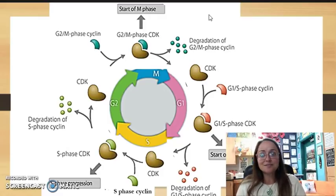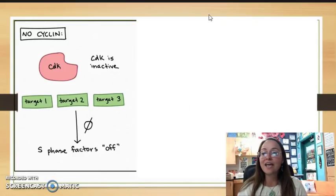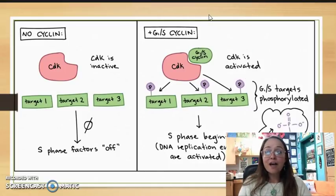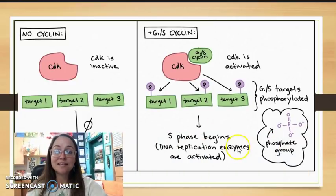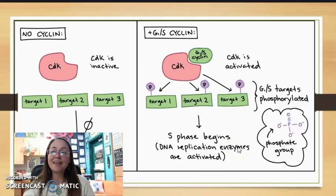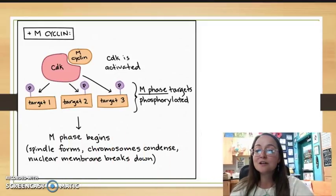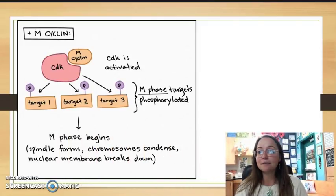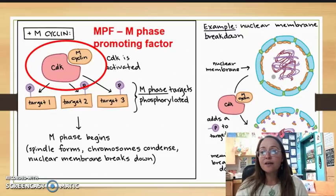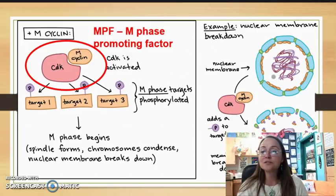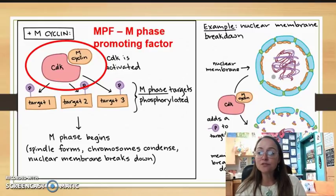Each phase of the cell cycle has specific CDKs. When we look at an inactive CDK, the target proteins are turned off. However, when the G1/S cyclin attaches, they are phosphorylated and S phase can begin when the DNA replication enzymes are turned on. When we look at the M phase promoting factor — MPF — this complex, when it phosphorylates certain target proteins, is how spindle fibers form, chromosomes condense, and the nuclear envelope breaks down.